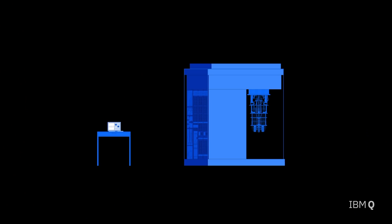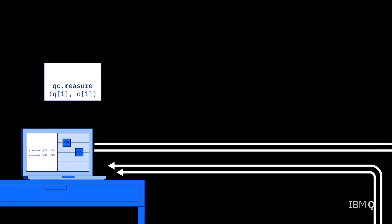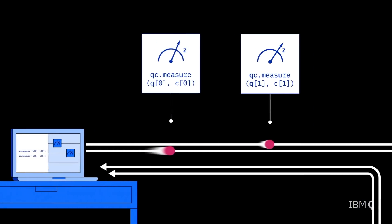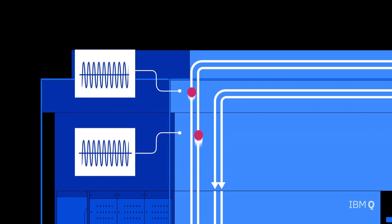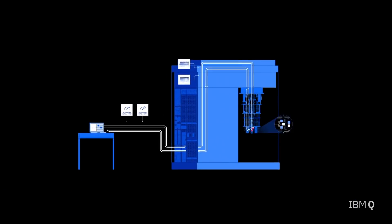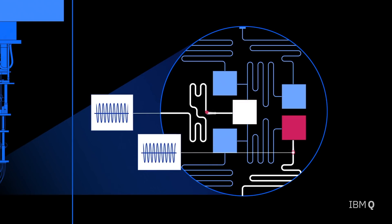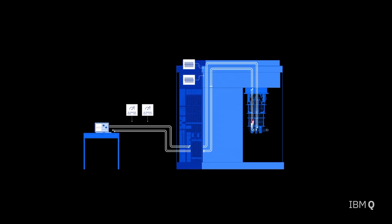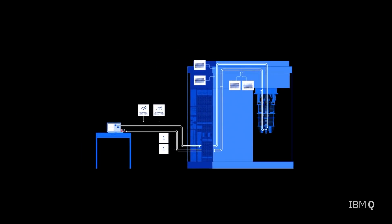IBM also released a video to demonstrate how a quantum computer works. In this demo, as you can see, the quantum computer is connected to a laptop. The laptop sends out two signals to the quantum computer, and these two signals go to the quantum chip at the bottom of the quantum computer. The quantum computer then computes these two signals and sends the results back to the laptop.